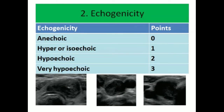The second feature is echogenicity. If it is anechoic, the points will be zero. If it is hyperechoic or isoechoic, the points will be one. If it is hypoechoic, the points will be two. If it is solid and very hypoechoic, it will have three points.